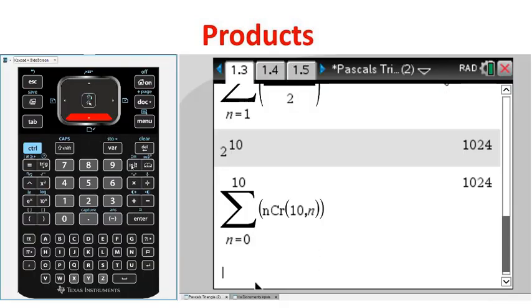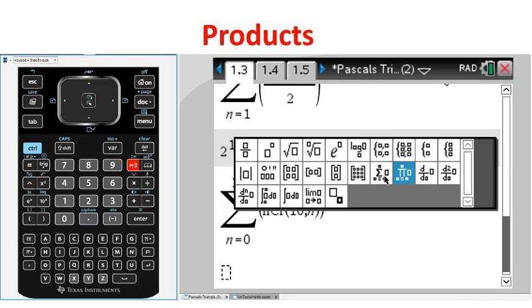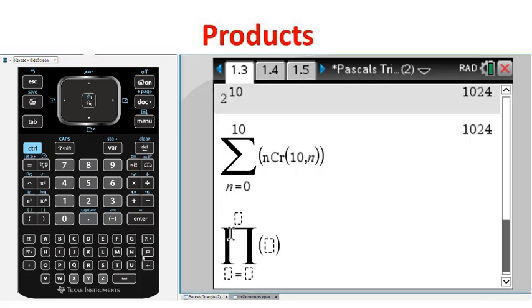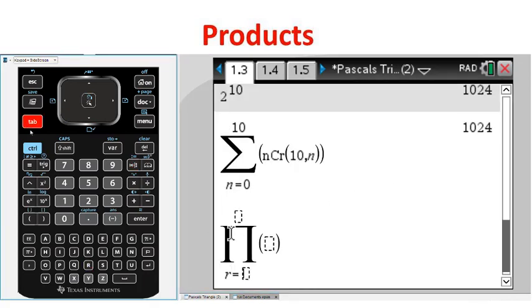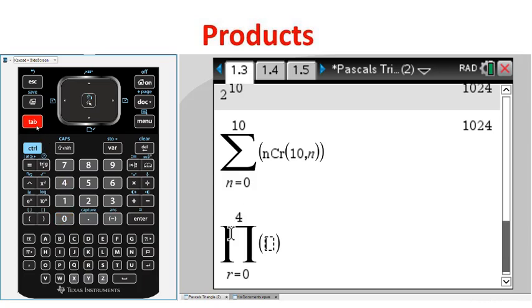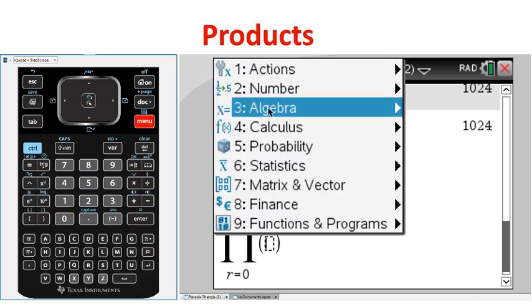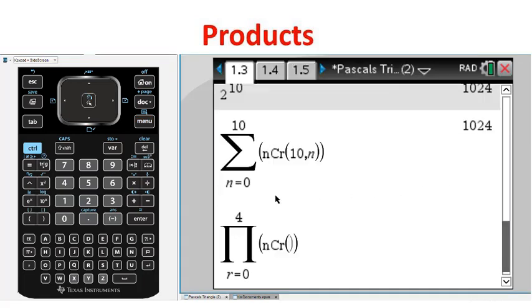Of course, there is a calculator template for sums and also products. The product of all the terms in a single row means that the n in our combinatorics is constant and the r is changing.